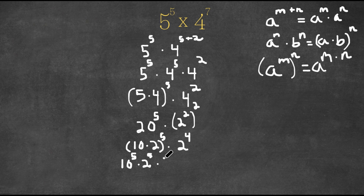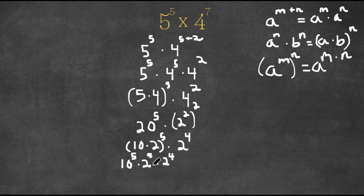And we're still multiplying this with 2 to the power of 4. Now remember this property: when we're multiplying two exponents with the same base, we add our exponents. So 2 to the power of 5 times 2 to the power of 4 is 2 to the power of 5 plus 4, which is 2 to the power of 9, times 10 to the power of 5.